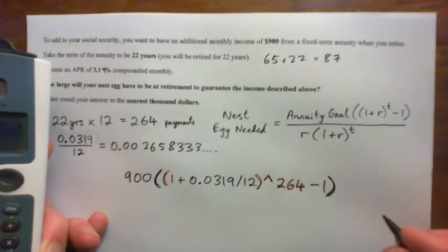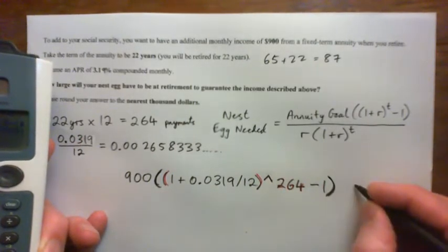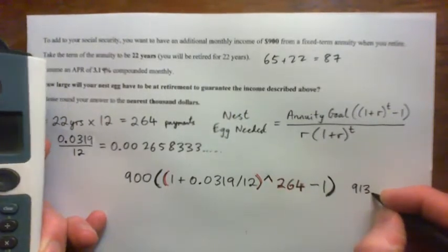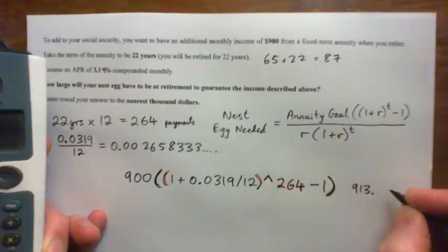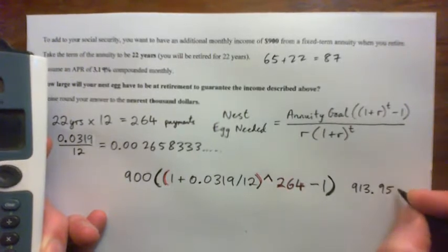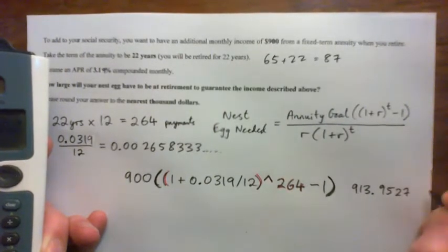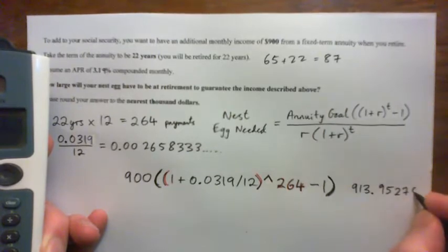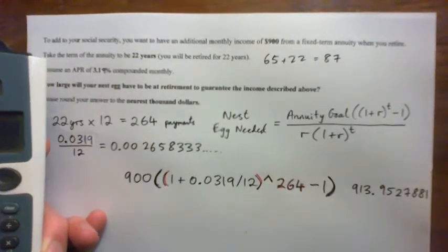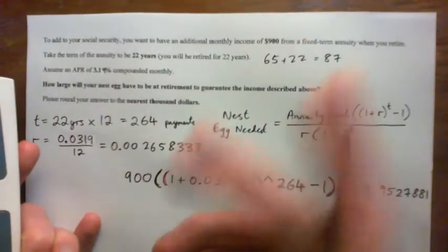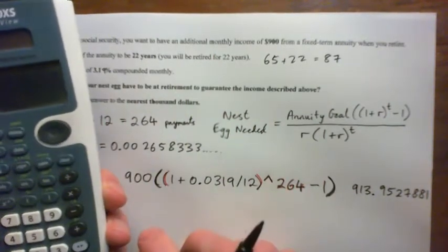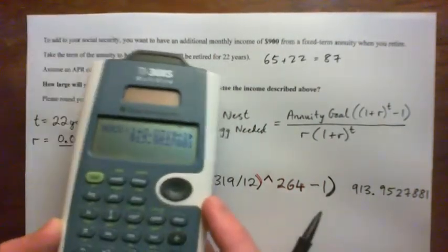So, in any case, that gives us on the top 913.9527881 or whatever. I mean, I guess I'll just write it all out. You don't really need to write all that out, especially if we're just rounding to the nearest thousand dollars. But this is also contained in my answer.